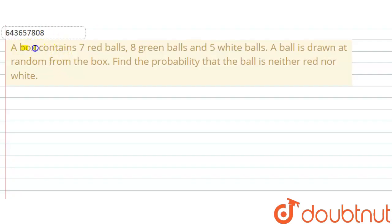A box contains 7 red balls, 8 green balls, and 5 white balls. A ball is drawn at random from the box. Find the probability that the ball is neither red nor white. So the box contains three different colors of balls.